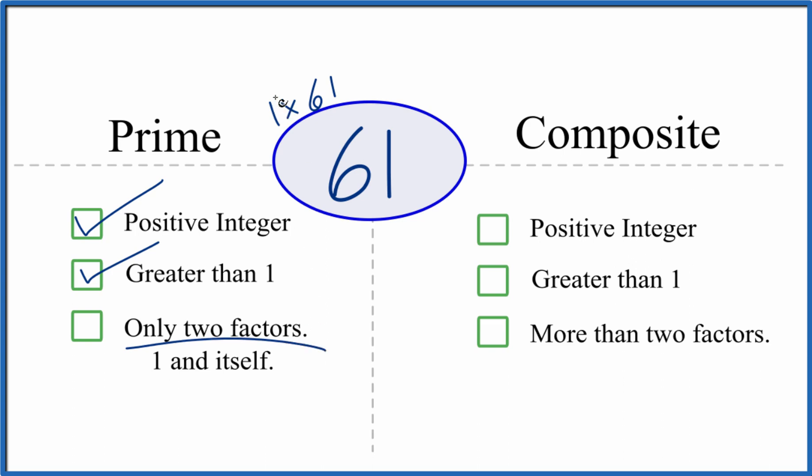So there are only two factors, 1 and 61. And that makes 61 a prime number.